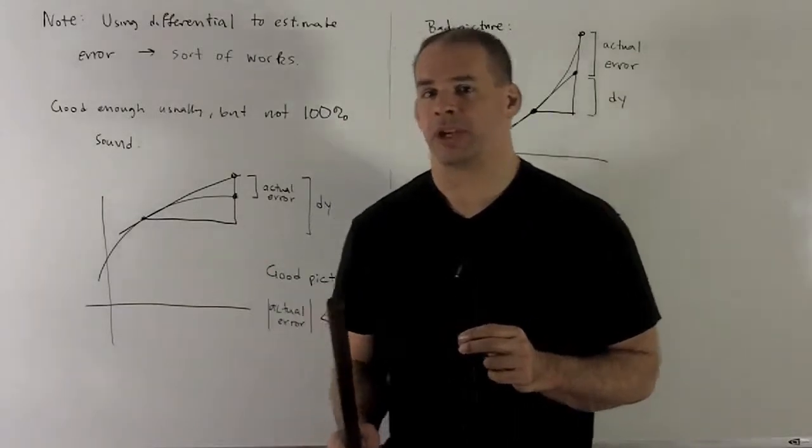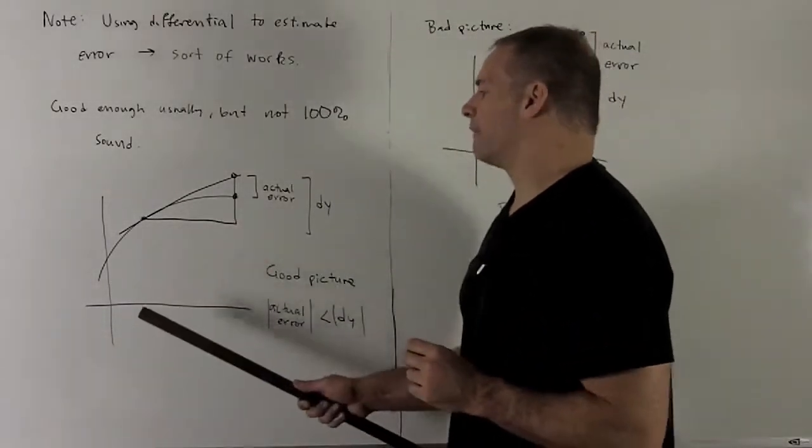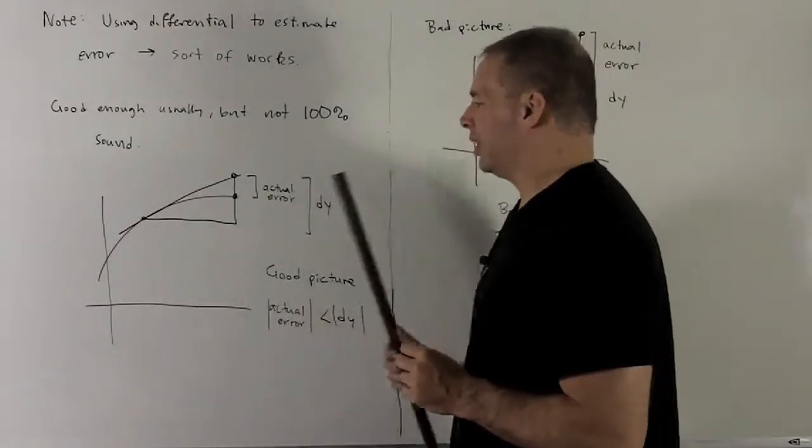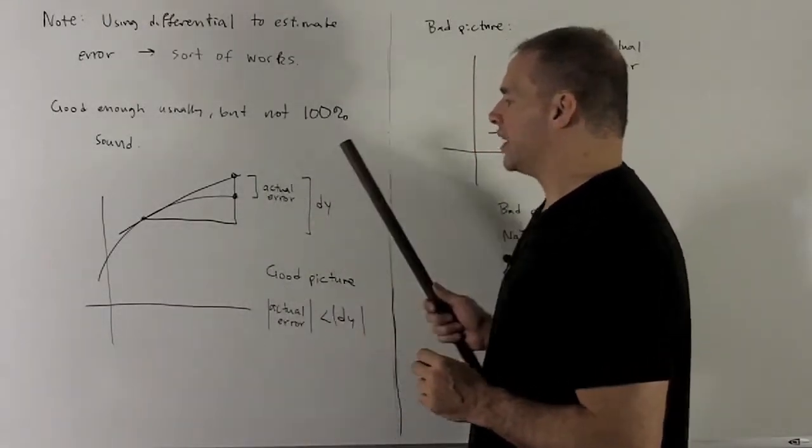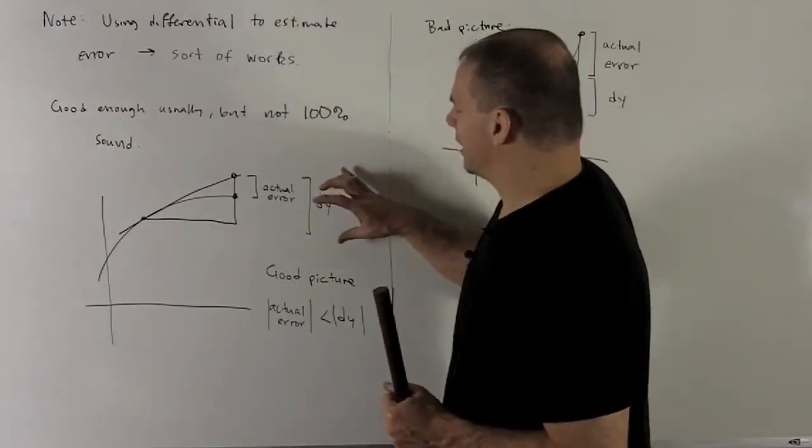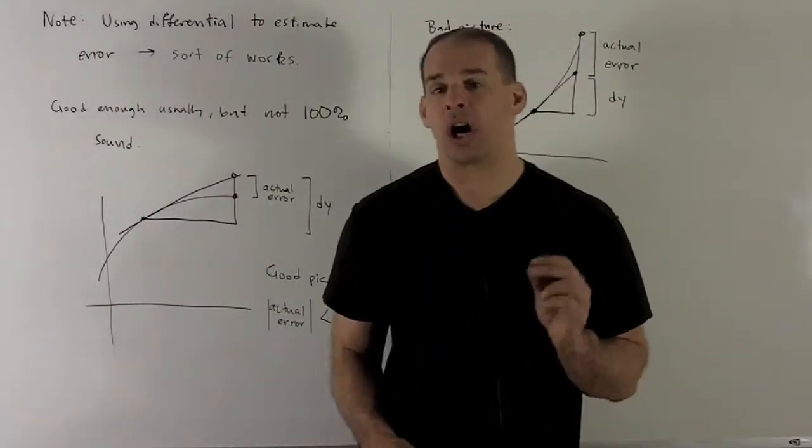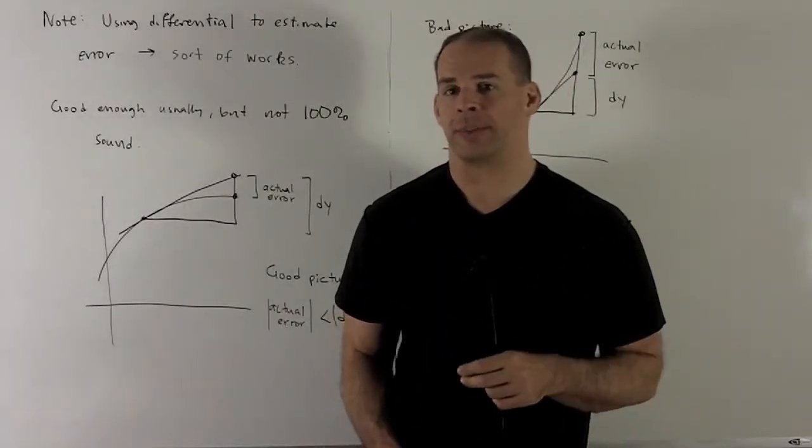Let's take a look at some pictures. So in our good case, let's suppose our function is concave down, increasing. I draw on our tangent line. And then we note the actual error is completely encompassed by the differential. So in this case, we are justified to use the differential to estimate the error.